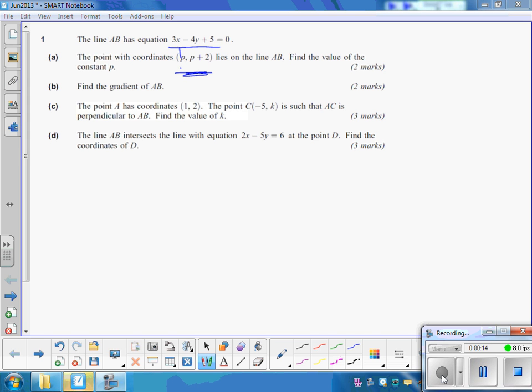So we put in the p, the x value where the x is, I think this is 3p, and we're putting this value here, the y coordinate, where the y is. p plus 2 plus 5 equals 0. So we've just got a little equation to solve here, being careful with the minus 2 times 4 here, which is the minus 8.